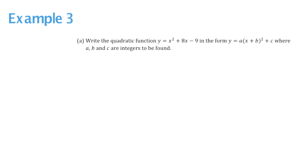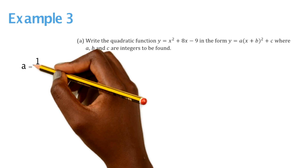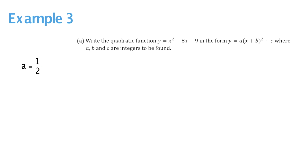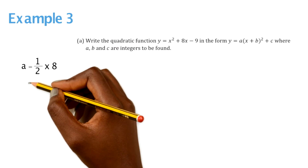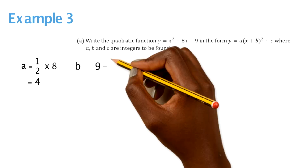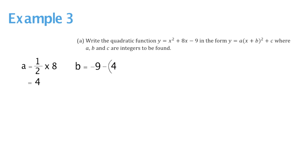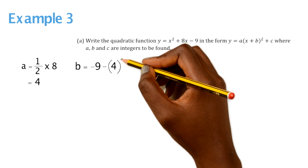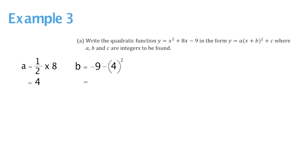In Example 3, we need to rewrite the quadratic function in completing the square form. We work out a as half of p — our p value is 8, so half times 8 gives a value of 4. Then b is q minus a squared — our q is minus 9, take away 4 squared. That gives us a b value of minus 25. So the completing the square format is (x plus 4) squared minus 25.